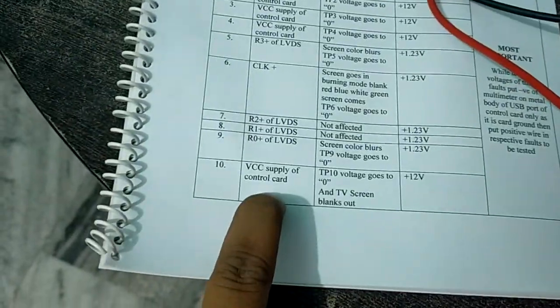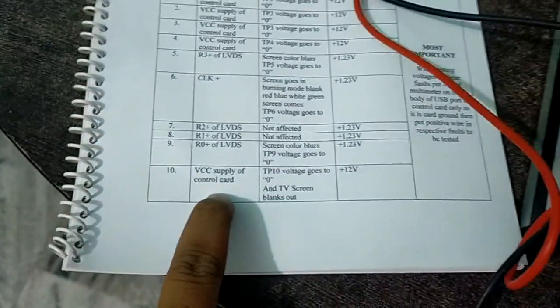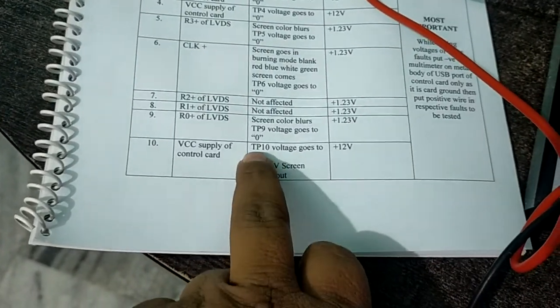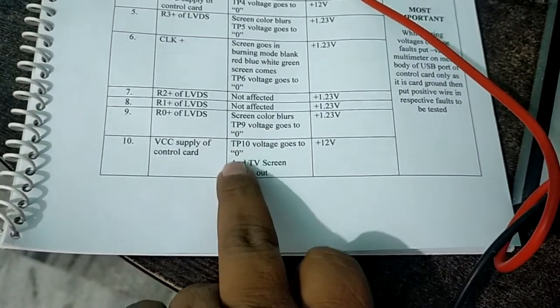Likewise, fault number 10. Fault number 10 is VCC supply of control card. If I put this to off, the TP10 voltage goes to 0 and TV screen blanks out.